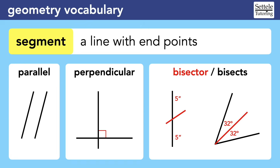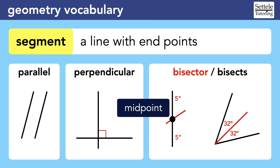The bisectors here are shown in red. The black line on the left is bisected, meaning that both the top and the bottom are the same length of 5 inches, so the entire black line is 10 inches. The spot where these lines intersect is the midpoint of the black line. A line can also bisect an angle, meaning that both angles are the same measure. On the right, a 64-degree angle was bisected into two 32-degree angles.